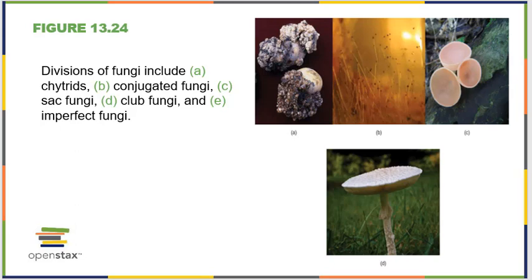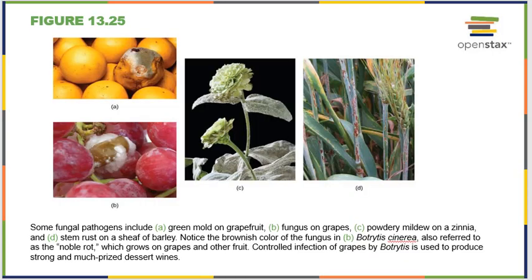There are different divisions of fungi depending on classification. Usually what you look at are the chytrids, conjugated fungi, sac fungi, club fungi, and imperfect fungi — broad categories similar to what we saw in the protists. Fungal pathogens are of great interest; we have mold on fruits, fungi that affect wine grapes, and powdery mildews that infect plants. But we tend to be most worried about molds that grow on wheat crops and corn crops, or crops that feed large numbers of people — that's where a lot of research dollars go.